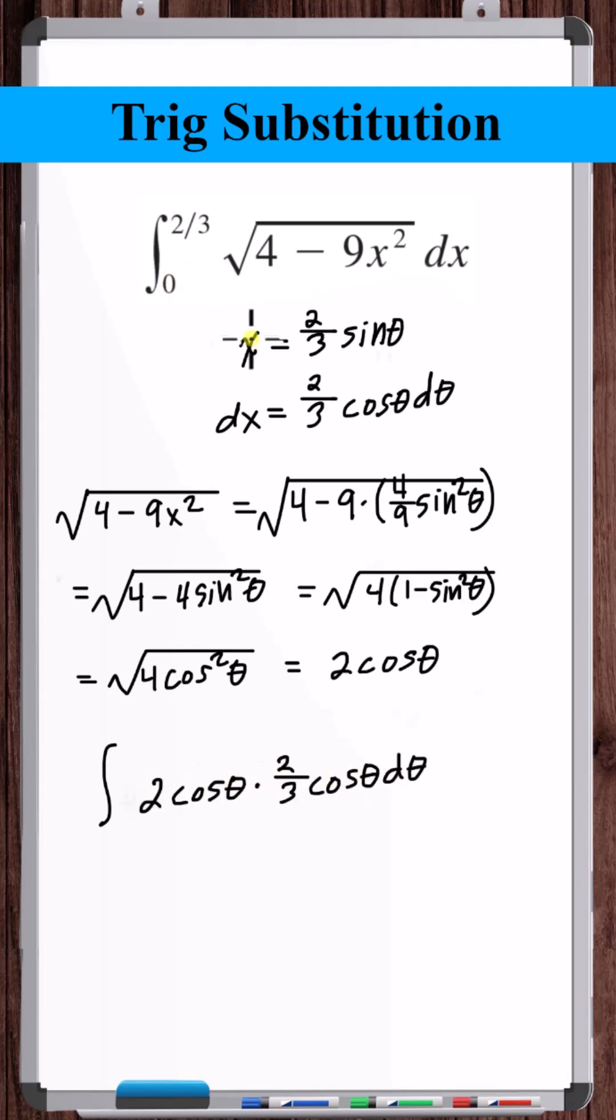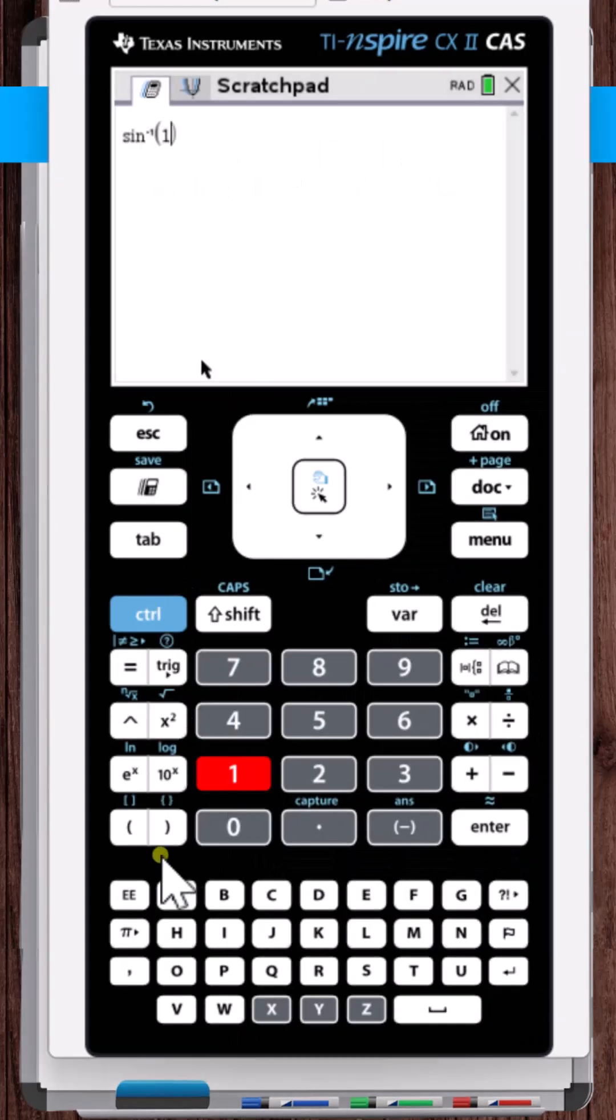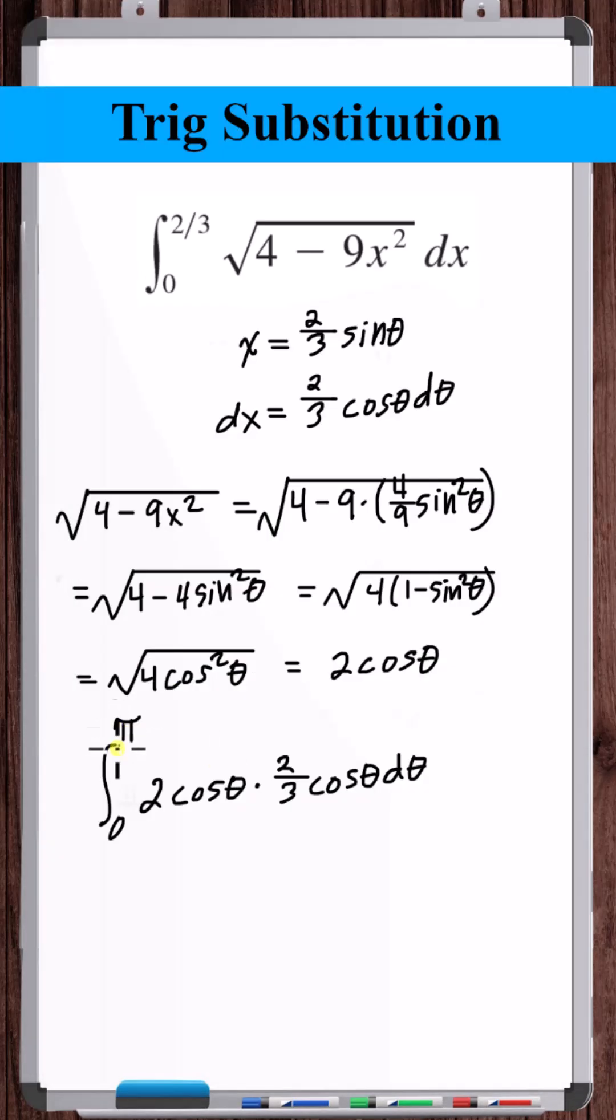When x is equal to 0, we have sine theta equals 0. Therefore, theta equals 0. When x is equal to 2 thirds, we have sine theta is equal to 1. Therefore, theta is equal to inverse sine of 1, pi over 2. Simplifying. And there we go. Now we've simplified this integral to this.